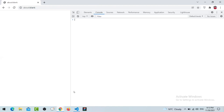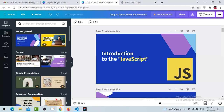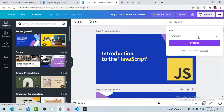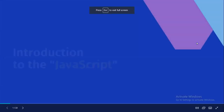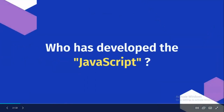So what JavaScript is - we will see a basic introduction. JavaScript is a programming language. What type of programming language - whether it is interpreted or compiled? Interpreted - okay, we will see. We are going to look at the introduction to JavaScript. Who has developed this language?